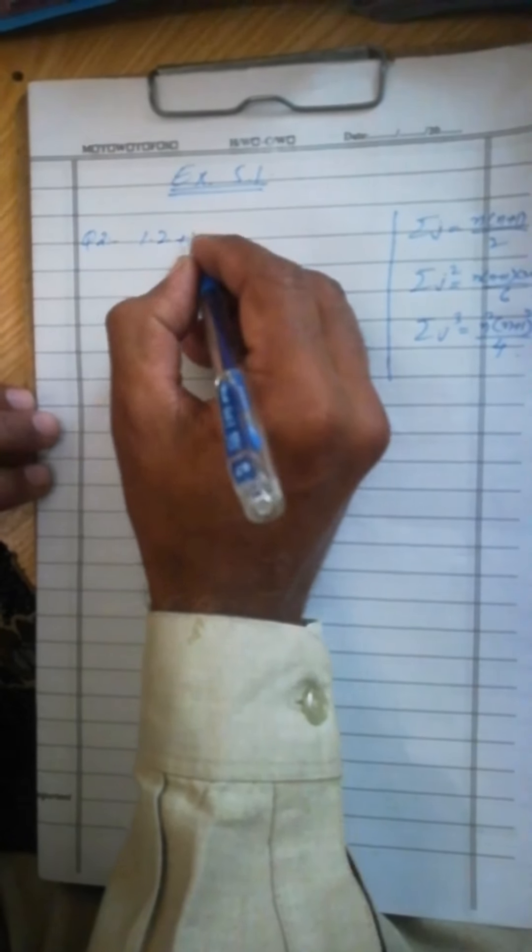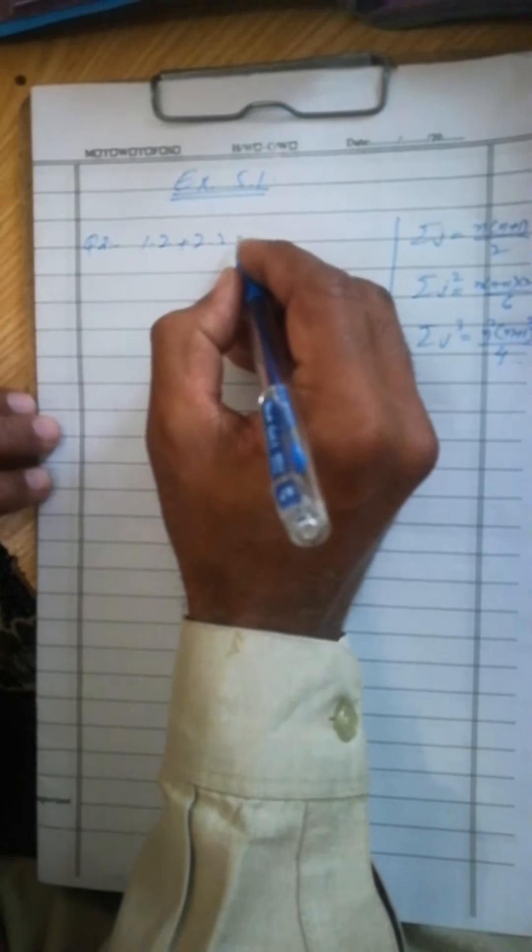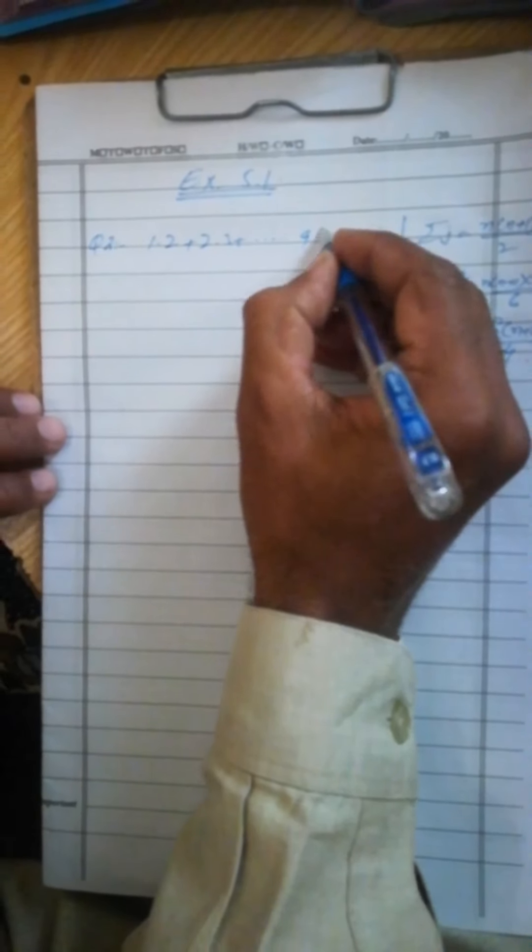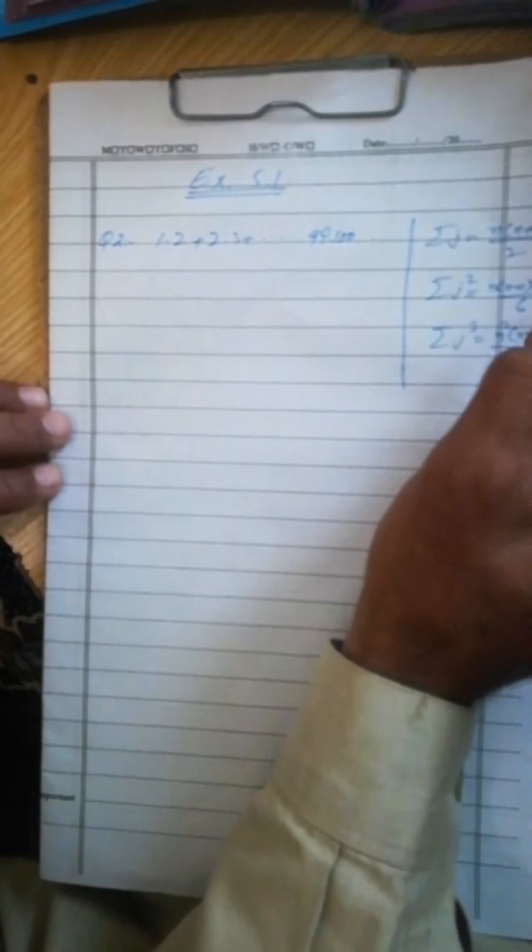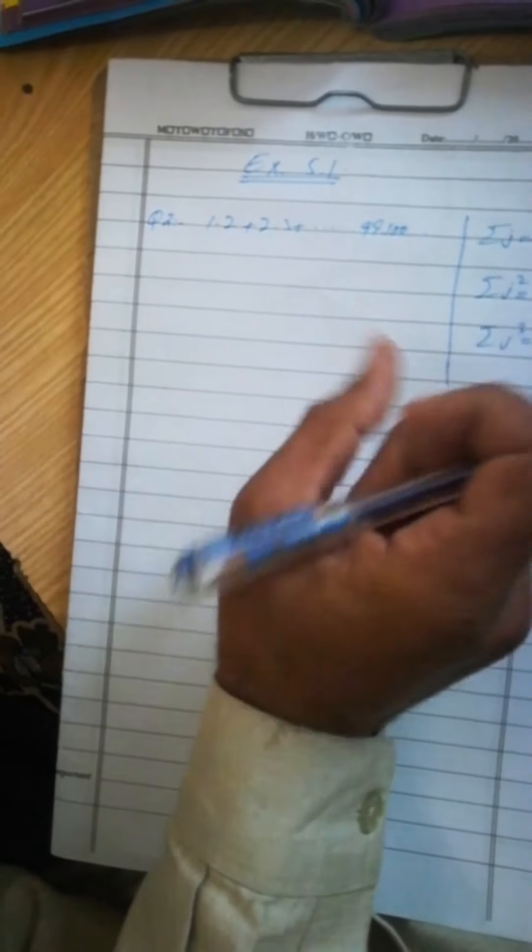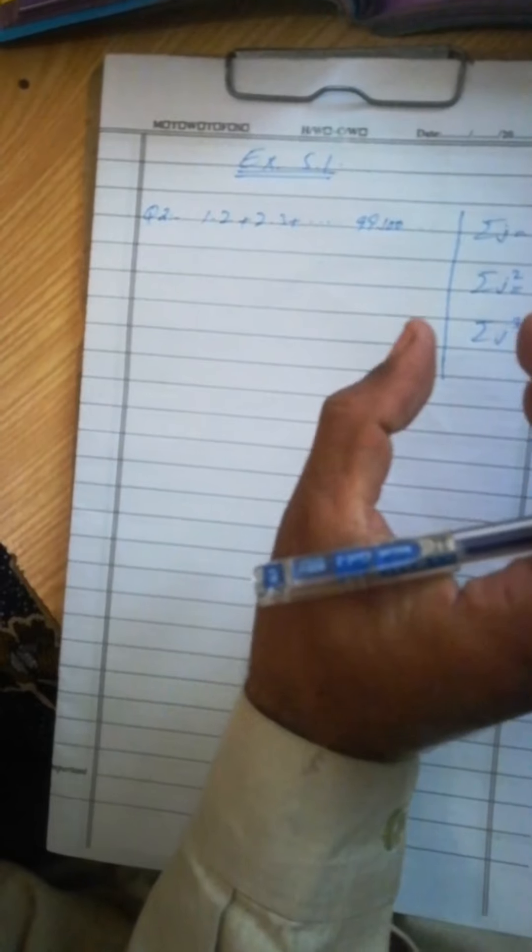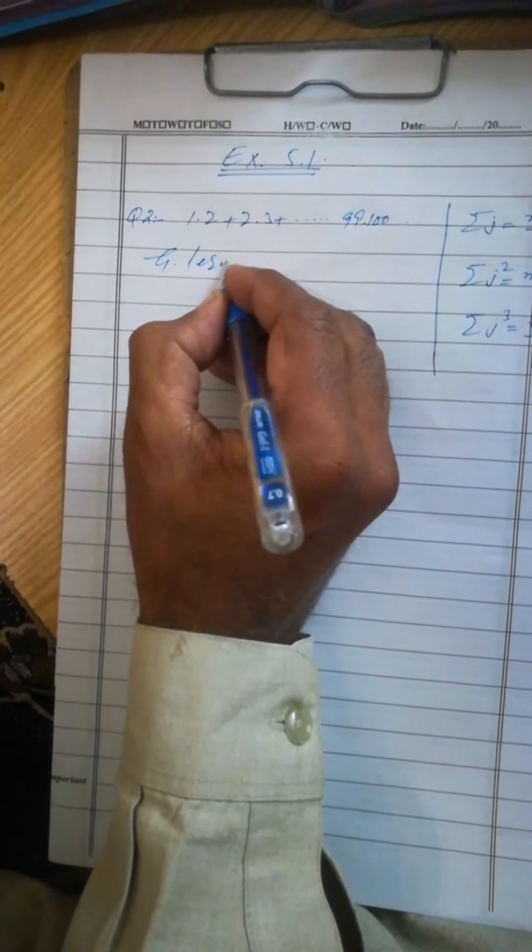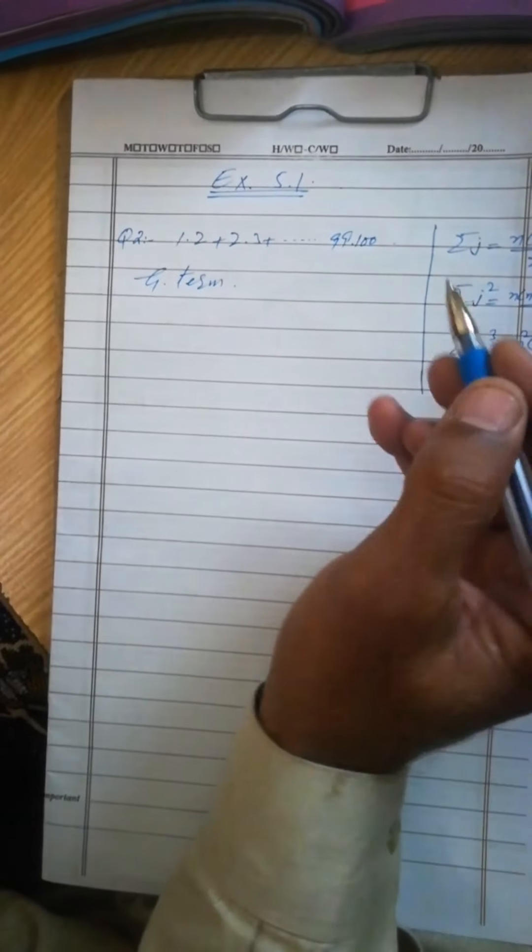The series is given: 1×2 plus 2×3 plus dash dash dash up to 99×100. We have to sum up this series. Find the sum of this series. So the first task is that we have to find the general term. If we get the general term, then it will be easy.